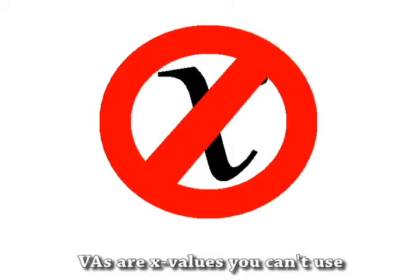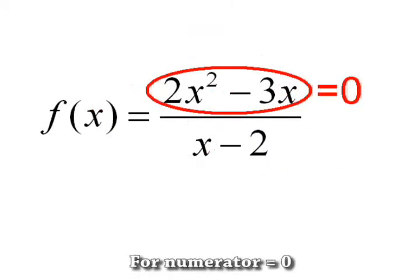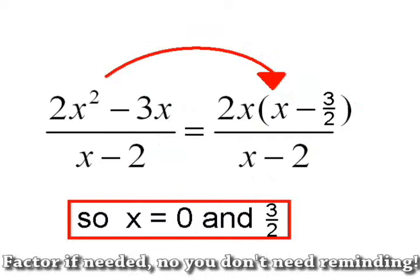VAs are x-values you can't be using, denominator zero, it's not confusing. For numerator zero, it's zeros you're finding, factor if needed, now you don't even remind it.